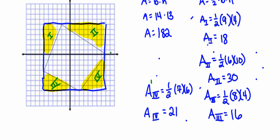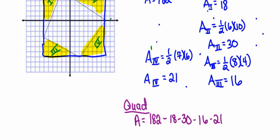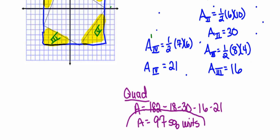Once I finish finding the areas of all of those figures, I'm going to find the area of the quadrilateral. Its area is going to be equal to the 182 square units in the rectangle, minus the areas in each of the triangles. Performing those computations, I end up with 97 square units for the area of the quadrilateral. While this is a time-consuming process, it's not necessarily hard work — it's finding areas of rectangles and triangles, things you've been doing since middle school.